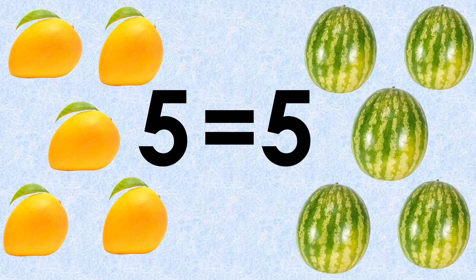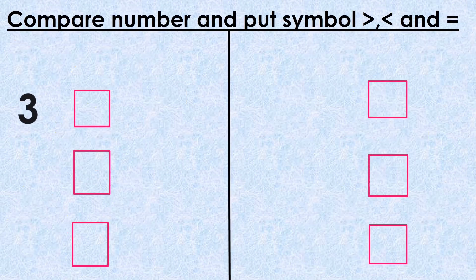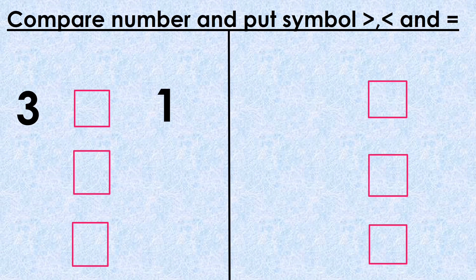Now we will compare numbers and put symbols greater than, less than, and equal to. Three is greater than one. Five is less than eight.